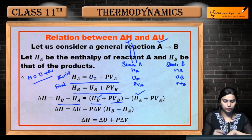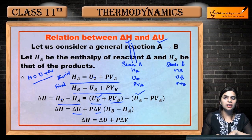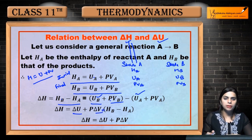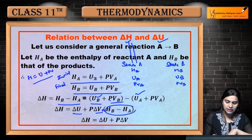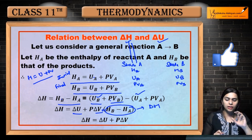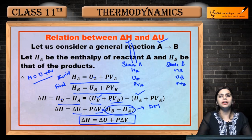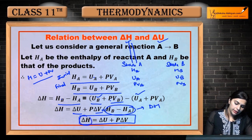After substitution: HB minus HA = (UB + PVB) minus (UA + PVA). UB minus UA gives us ΔU. Since pressure P is constant, it is common, so we get P times (VB minus VA), which is PΔV. And HB minus HA represents ΔH.